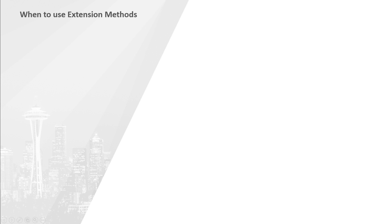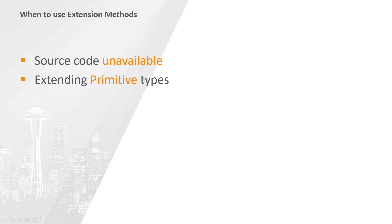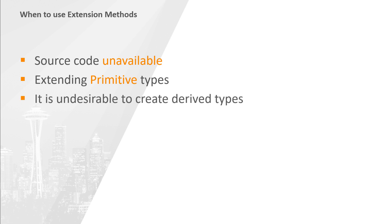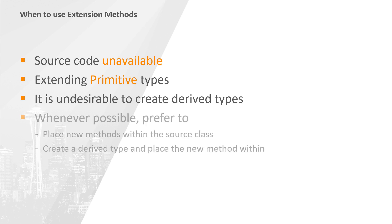So when should you use an extension method? Well, surprisingly, they should be avoided as much as possible. They can be a valid alternative when the source code is unavailable, or if you're extending primitive types, or if for some reason it is deemed undesirable or impossible to create derived types. In most cases, it is better to extend existing types by placing new methods within the source classes themselves, or even better, create a derived type and place the new method in there.